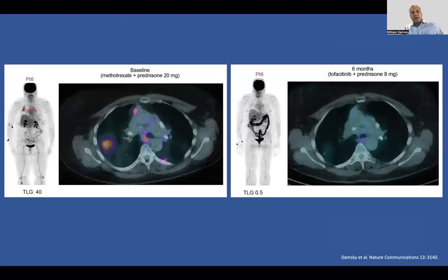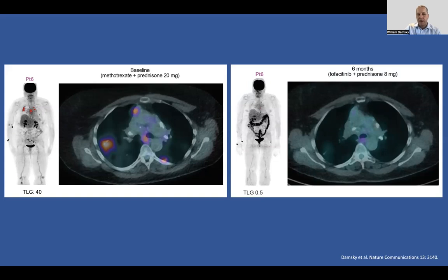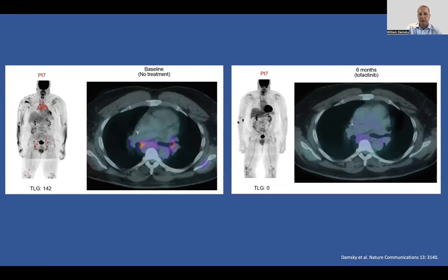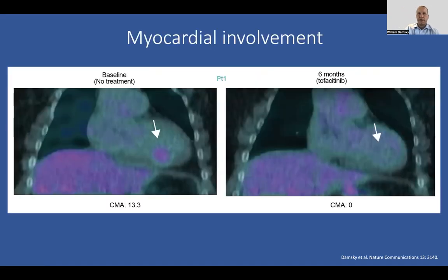And what about internal organ disease in these patients? The internal organ responses mirrored those observed in the skin. We chose to follow patients using PET scans, which we thought would reflect active granulomatous inflammation. One patient on methotrexate and prednisone had significant disease activity at baseline, was switched to tofacitinib at a lower dose of prednisone, and eventually came off prednisone with really nice control of her disease. Another patient had myocardial involvement that also had a very nice response to tofacitinib monotherapy during this trial.